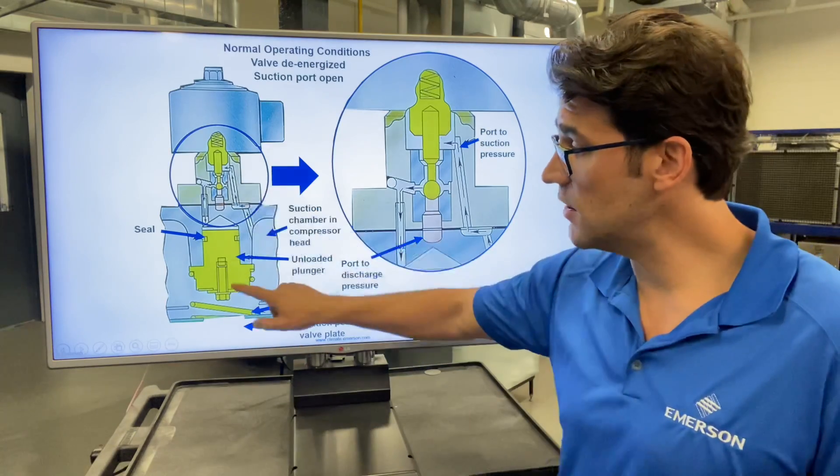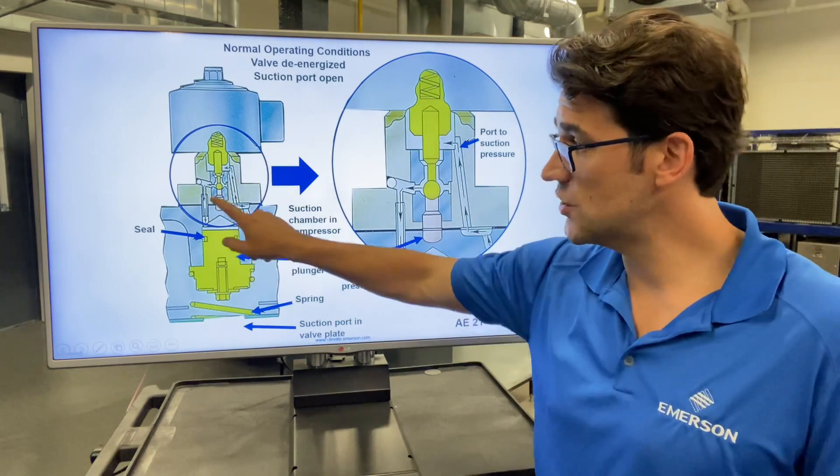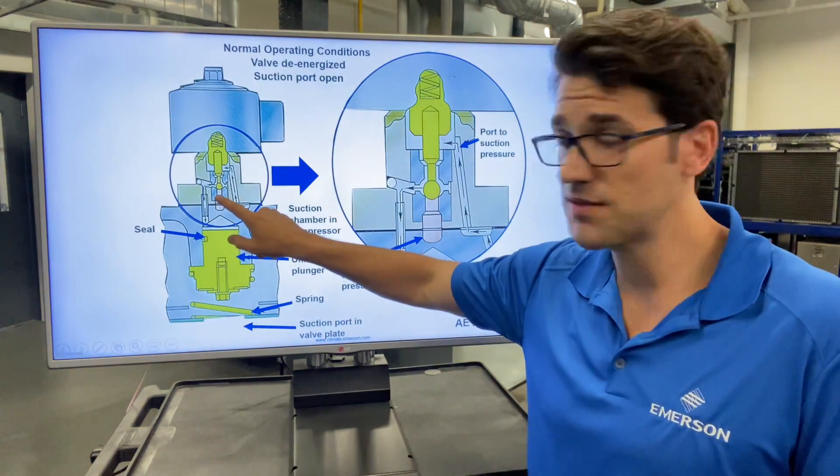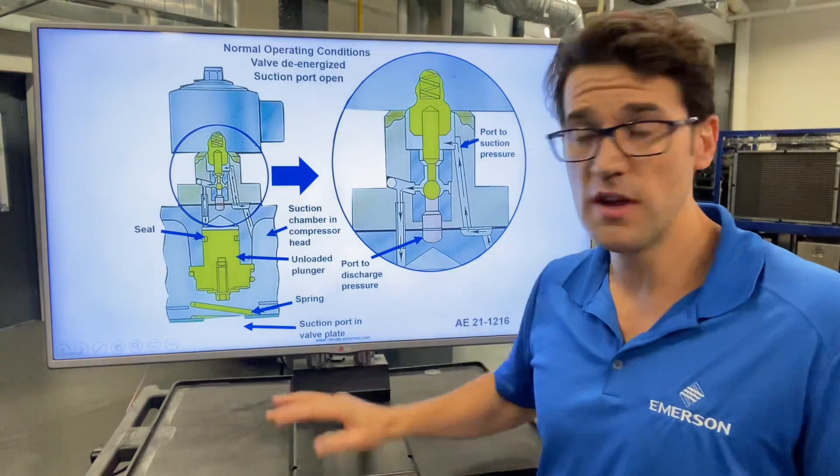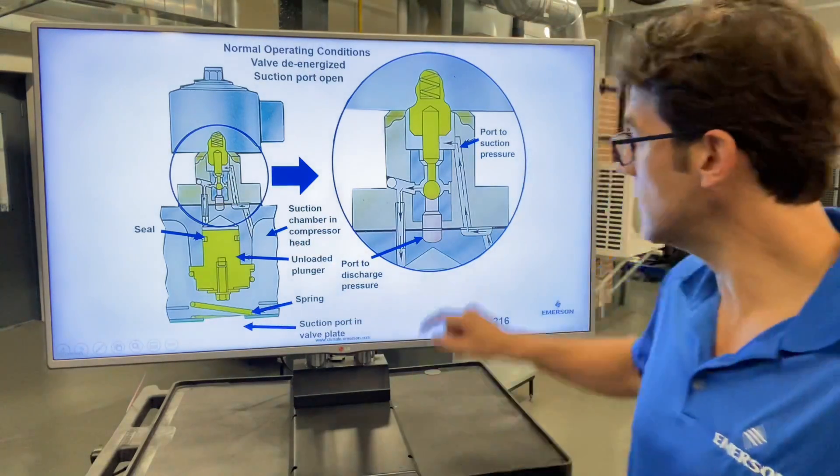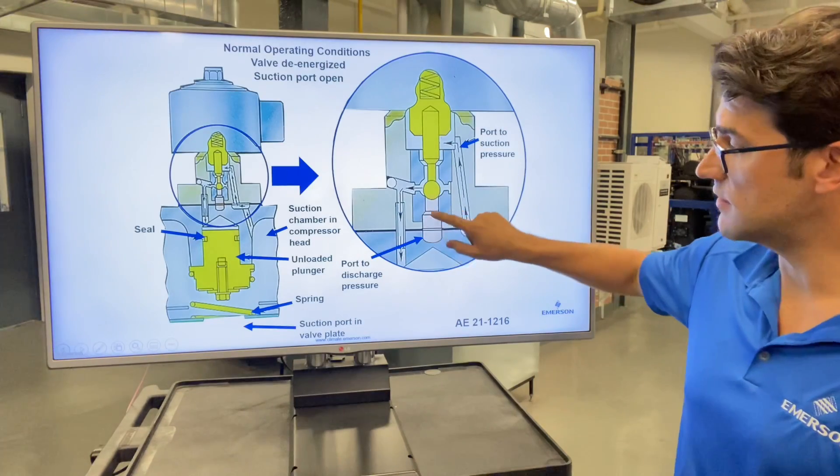When it's de-energized, the discharge port is closed and you have your suction port coming in, flowing through this special valve plate. You can see right here, the discharge is closed.